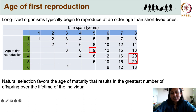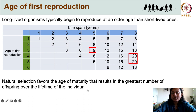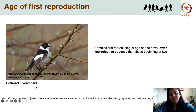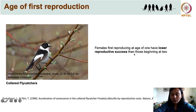Natural selection favors the age of maturity which results in the greatest number of offspring over the lifetime of the individual, so it depends on how long a species lives. This is not just hypothetical — people have found examples of this trade-off in the wild. For instance, for collared flycatchers, females that start reproducing at the age of one typically have lower reproductive success than those that start reproducing at the age of two.